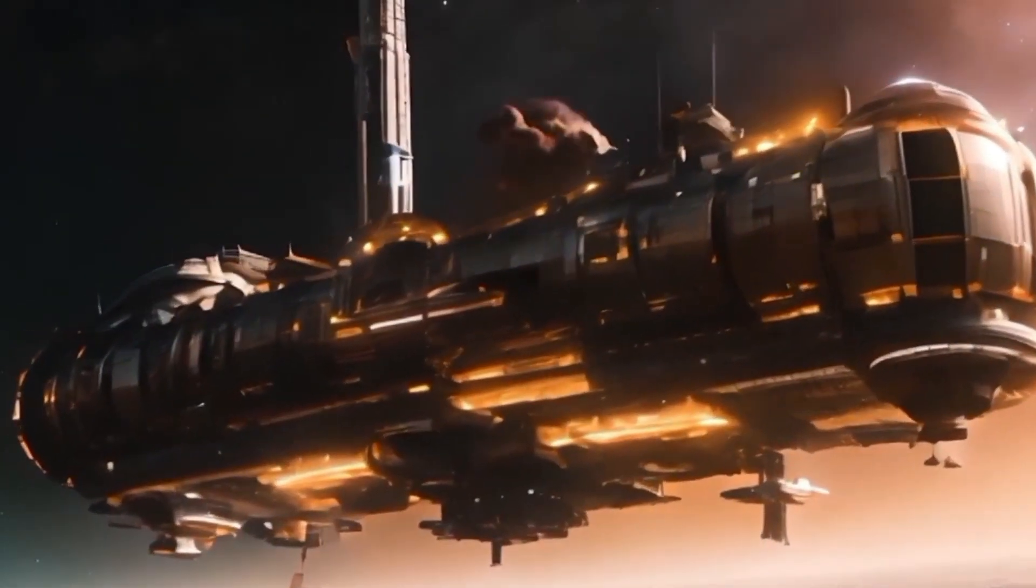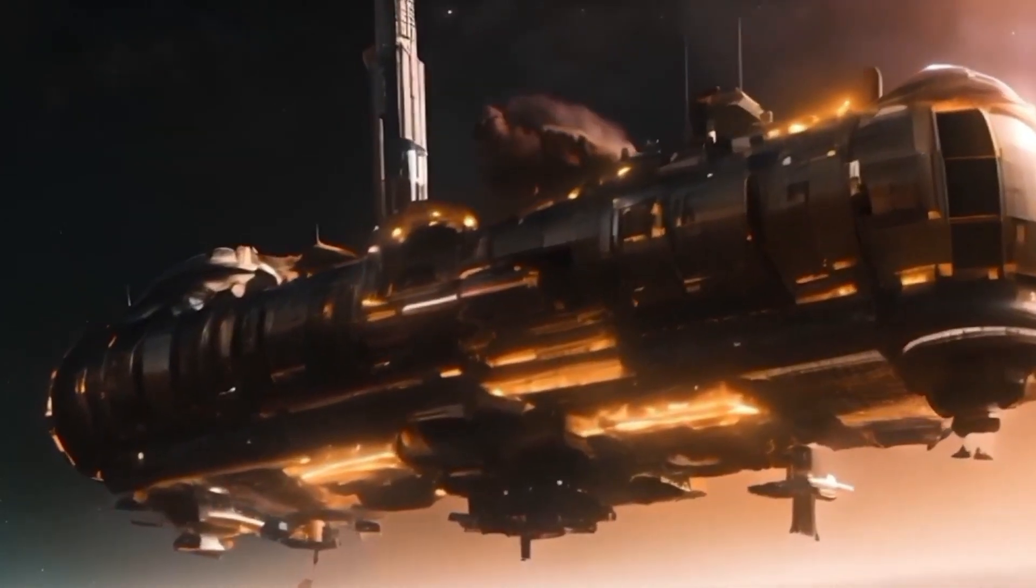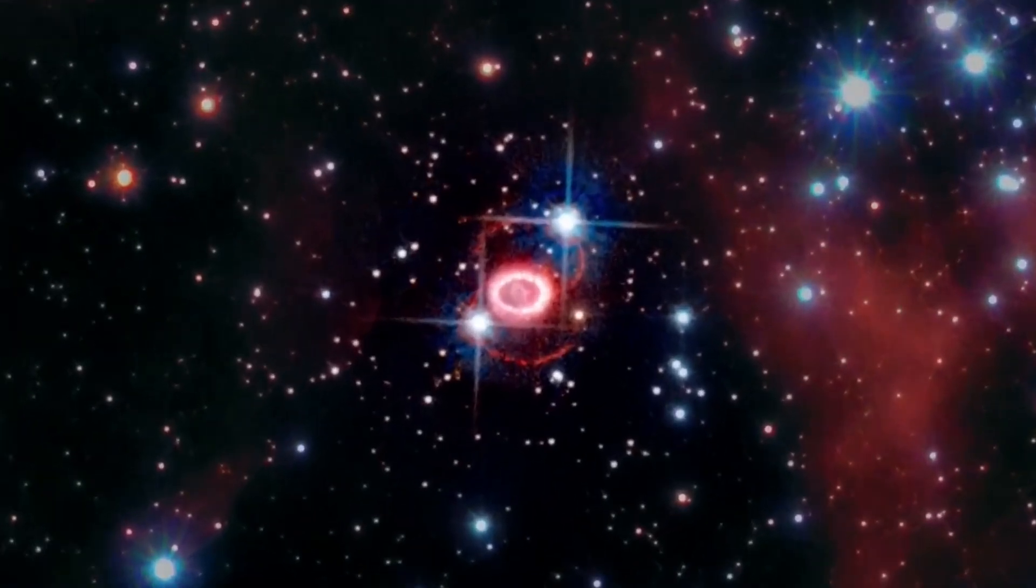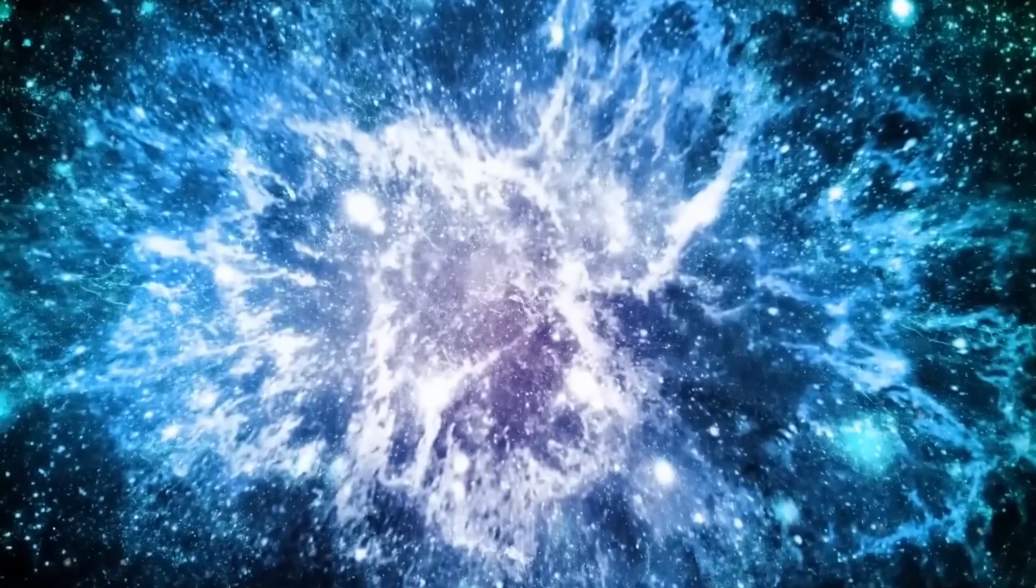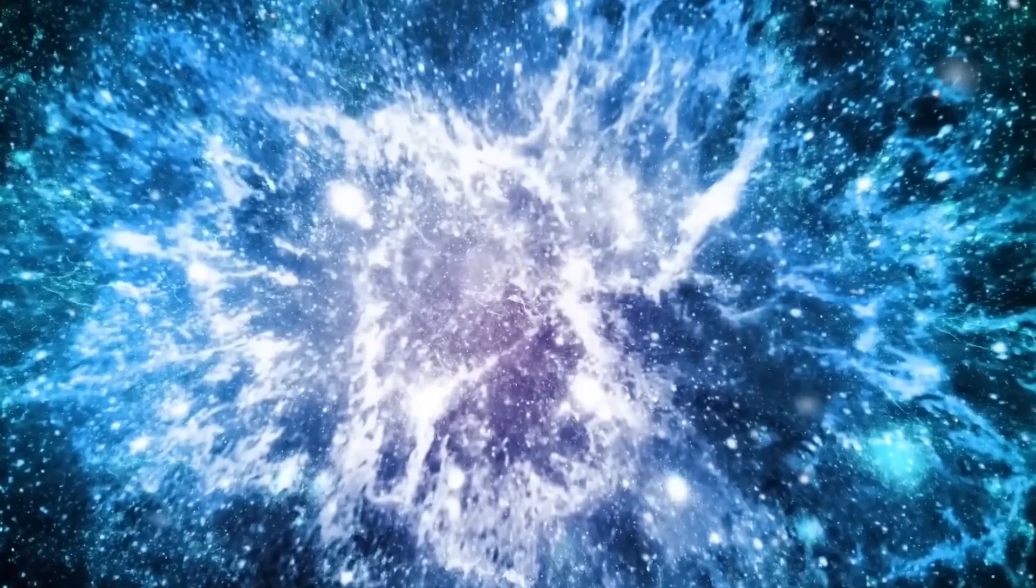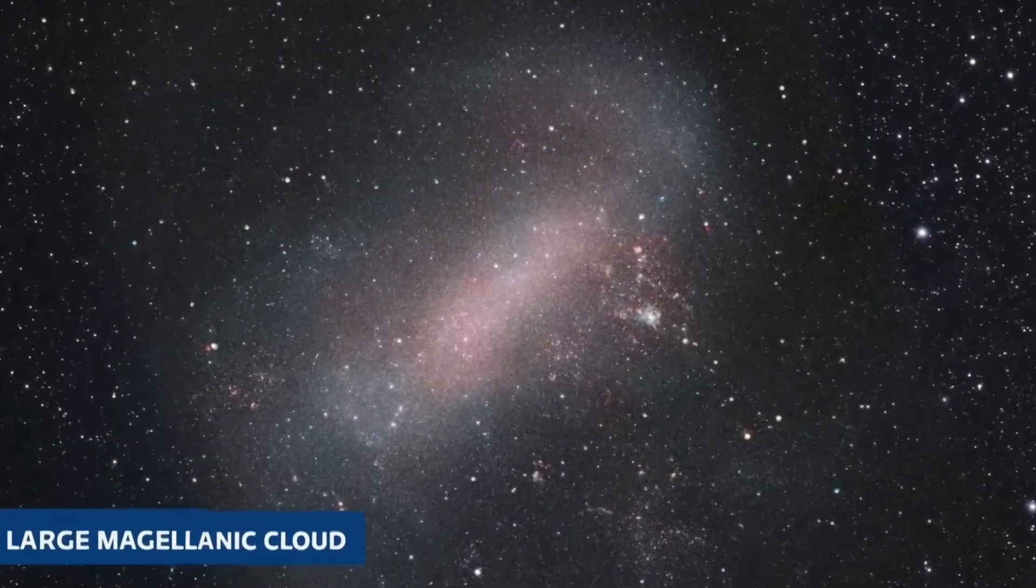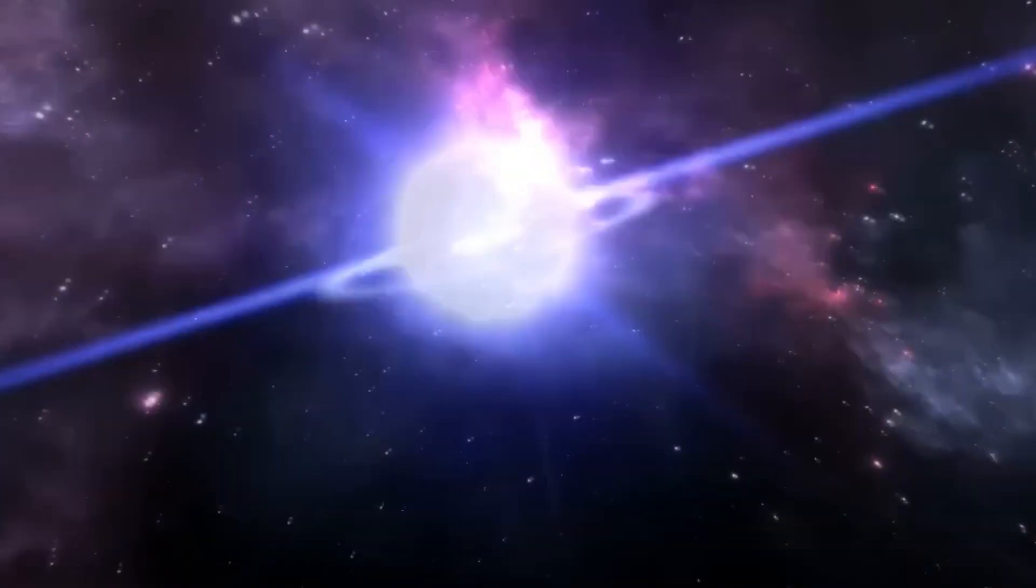While neutron stars typically form after a supernova explosion, the one in SN 1987A remains elusive, primarily due to its dense core. This explosion likely symbolizes the death of a blue supergiant star, one of the most massive and luminous stars in the universe.